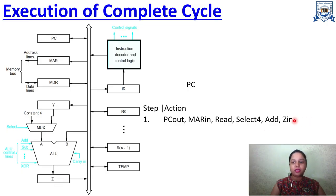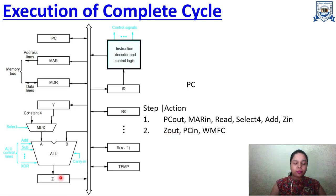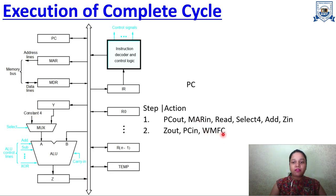The temporary register Z then gives out its value — 1004 — and it is written to PC. So now 1004 is stored in PC, which will be the address for the next instruction. WMFC stands for Wait for Memory Function to Complete — it means all of these memory operations must complete before moving to the next step.